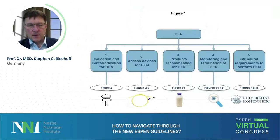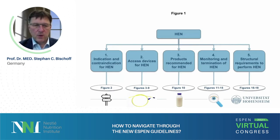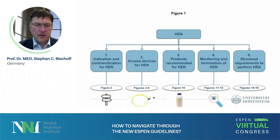The new thing in our ESPEN society is that we transform scientific guidelines into what we call practical guidelines. These practical guidelines are a little shorter than the original ones, and most importantly, they are presented in a graphical way. That means flowcharts will present the content of these guidelines.